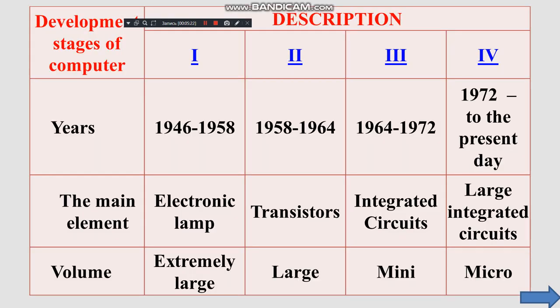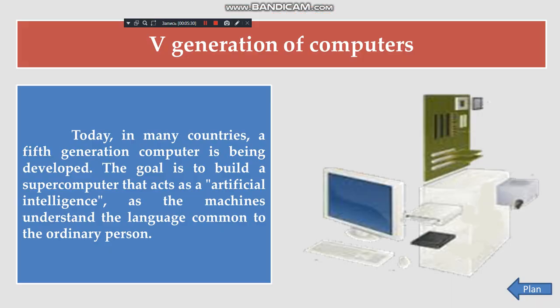In the development stages of computers, there have been several generations, each with main element volumes. Today, in many countries, a fifth-generation computer is being developed. The goal is to build a supercomputer that acts as an artificial intelligence — machines that understand the language common to ordinary people.